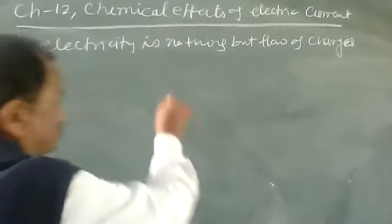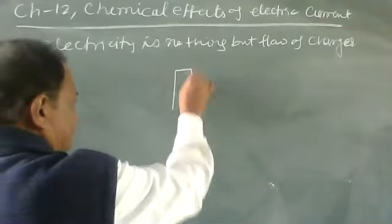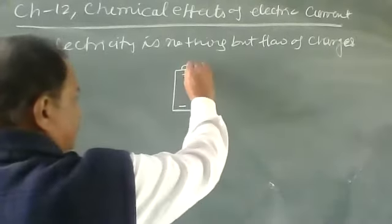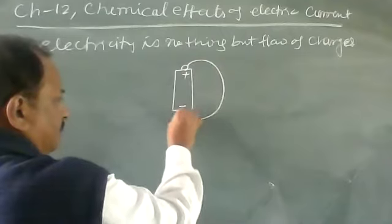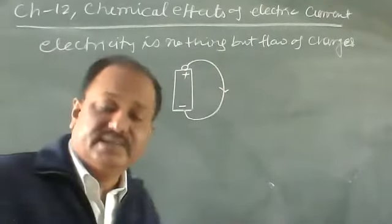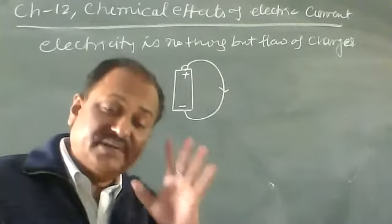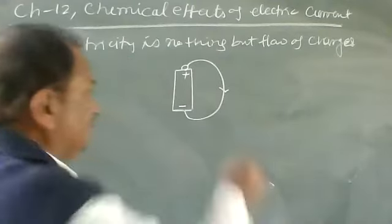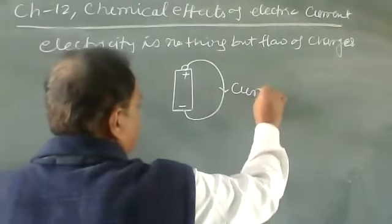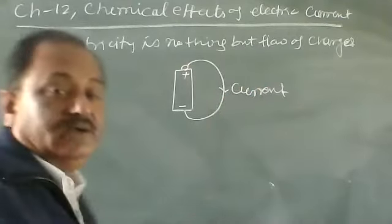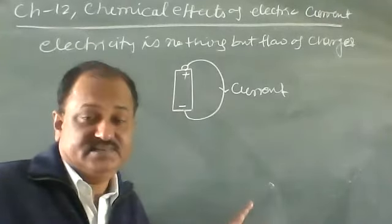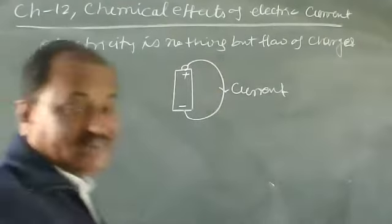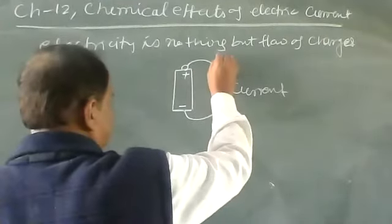In a cell, there is a positive terminal and a negative terminal. Current flows from positive and goes up to negative. This concept applies in cells, batteries, and electric wires. The direction of current: current always flows from positive to negative, because of the difference in potential.